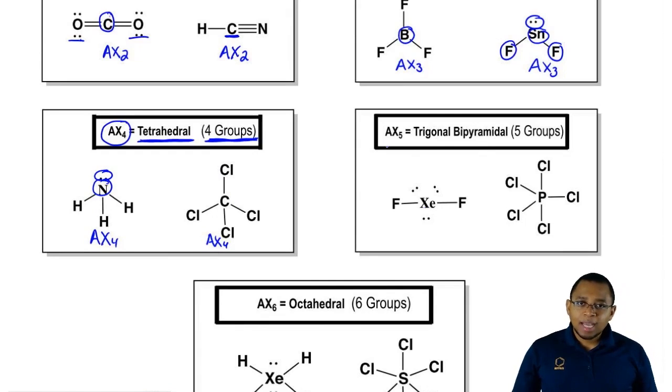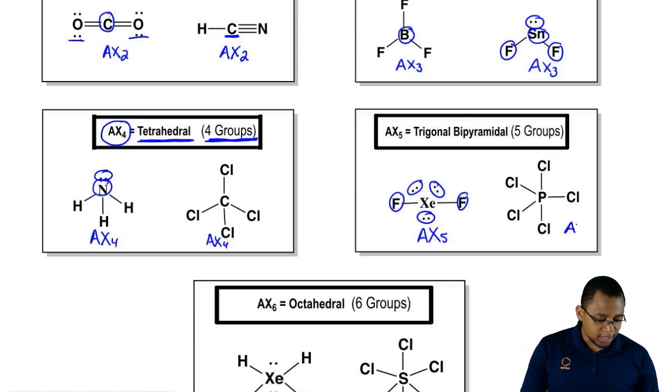If you're AX5, your electronic geometry is trigonal bipyramidal. Here, xenon is in the center. It's surrounded by two surrounding elements but it also has three lone pairs. We treat all those groups as X, AX5. Phosphorus here would also be AX5.